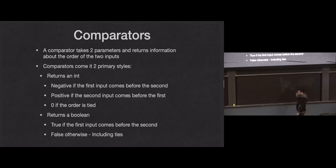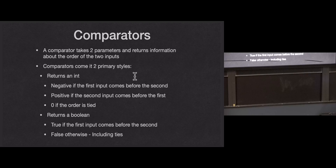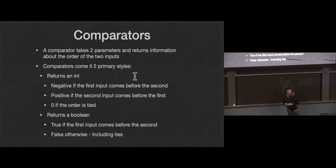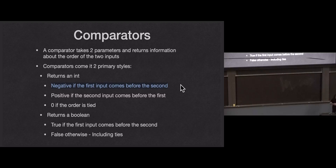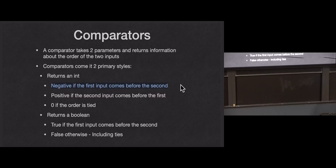Comparators come in two different flavors. The one you saw last semester in 115 — and I'm pretty sure this is the only flavor you see in 115 — returns an int. It takes two parameters and returns an integer: negative if the first parameter comes before the second, positive if the second comes before the first, and zero if the two values are tied. So if I call a comparator sorting integers in increasing order and give it one and three, it returns a negative integer because one should come before three. If I reverse it to three and one, it returns positive, and one and one returns zero.